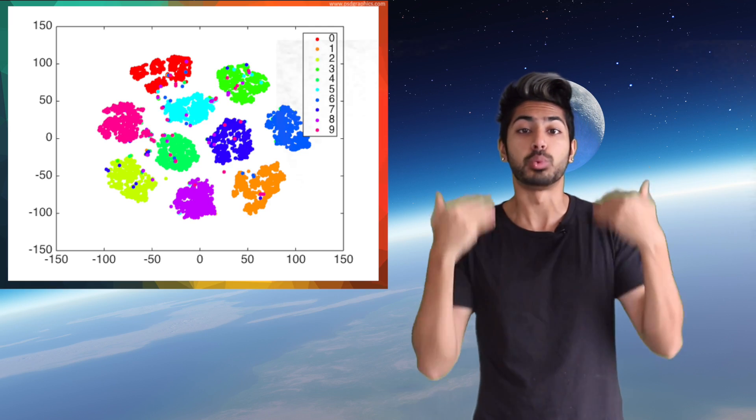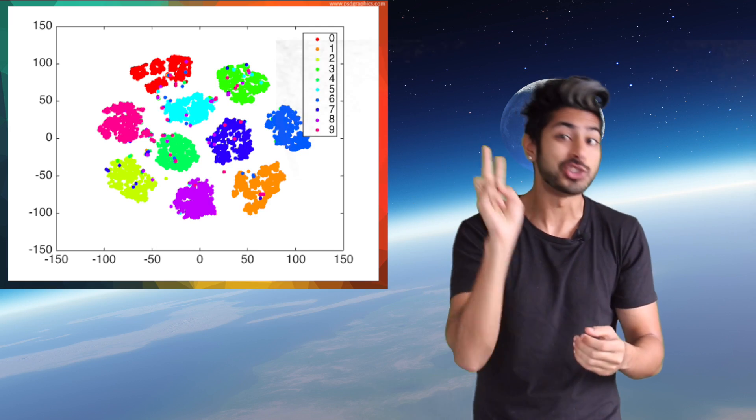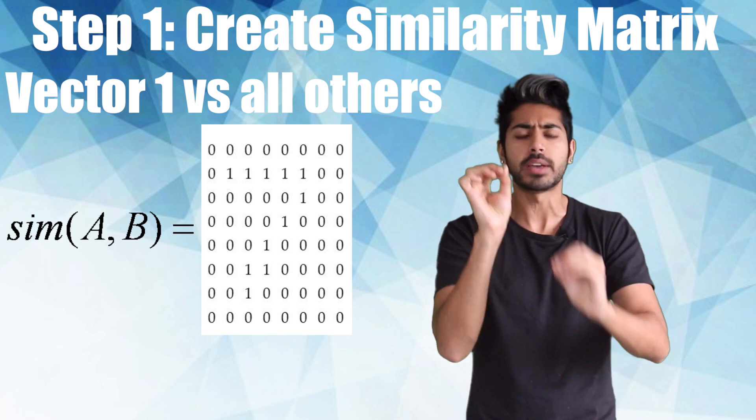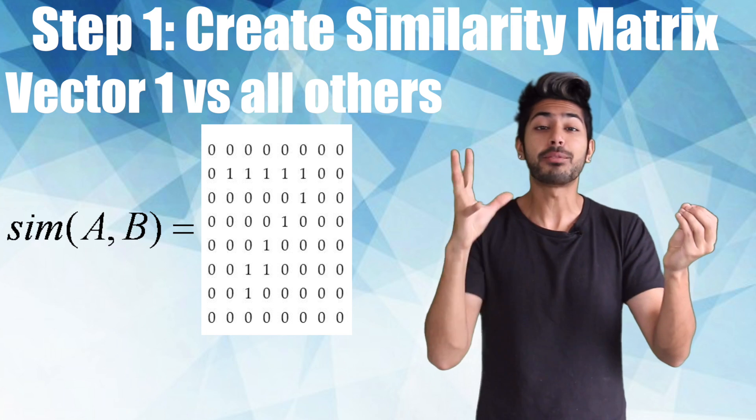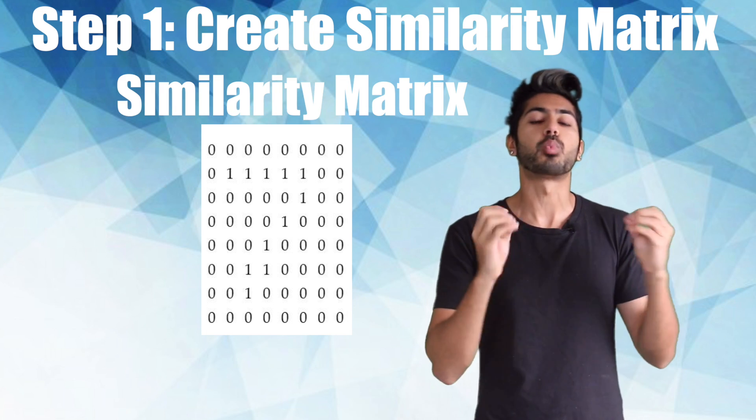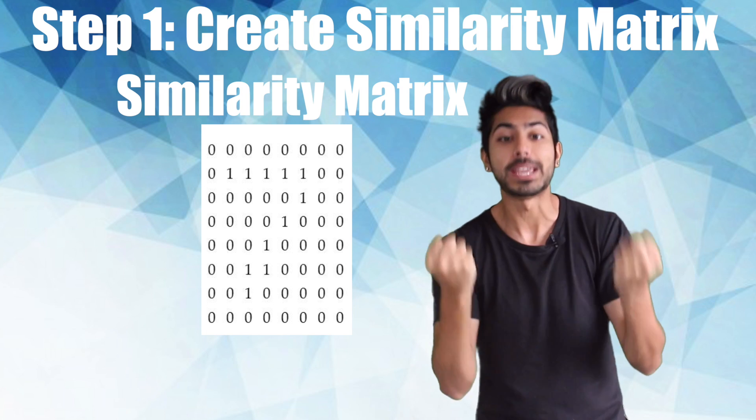t-SNE will allow us to reduce our vector's dimensionality to just two. It does this by taking each one of our 70 dimensional feature vectors and finding the similarity between it and every other vector. These similarities are represented as values and stored in a similarity matrix.